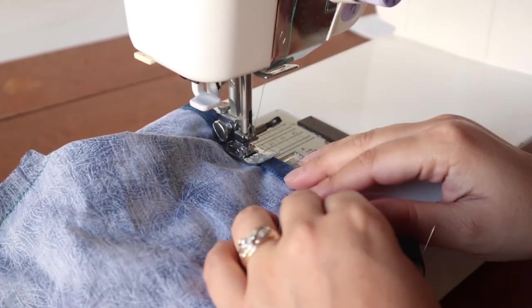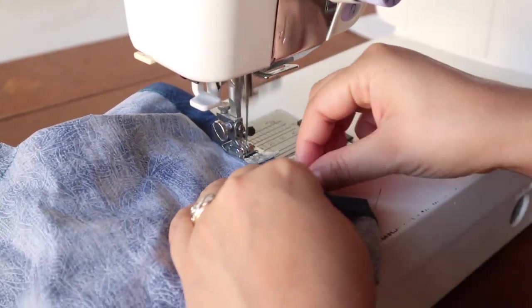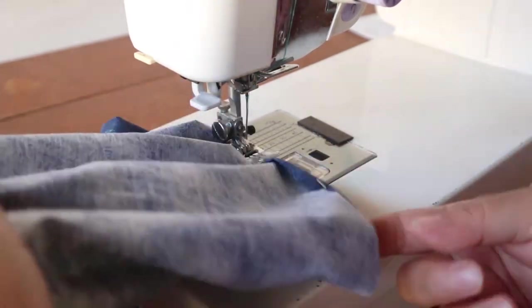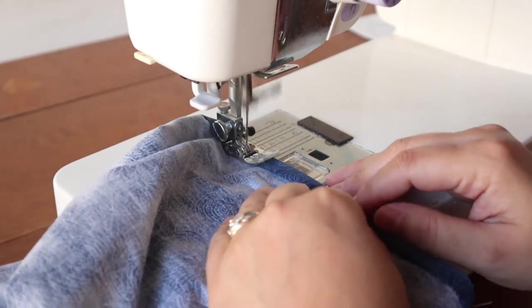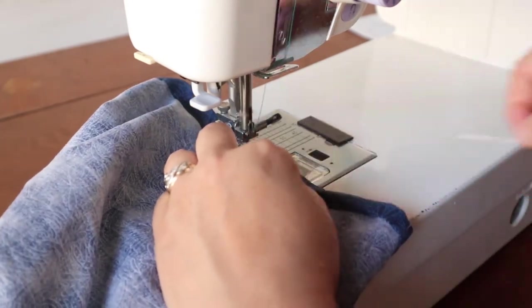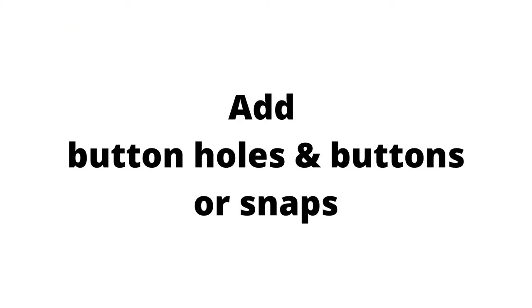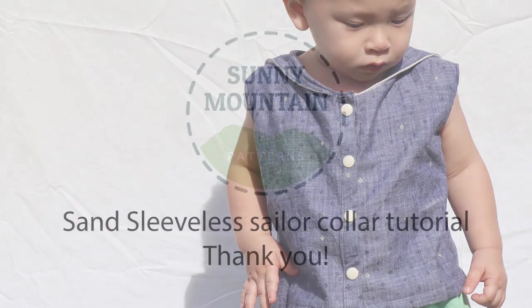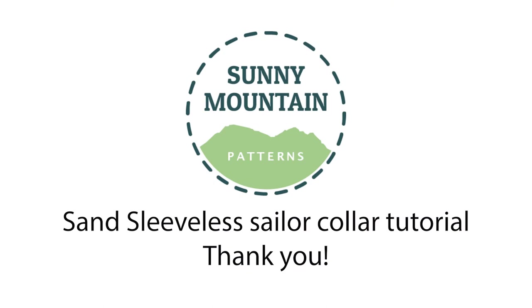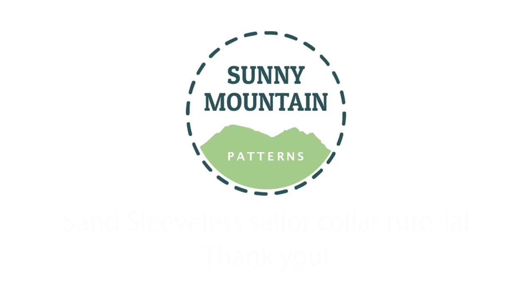Now you can hem everything all the way across. So this is a double fold of a half an inch. If you need a slightly longer one, you can do a little less, or you can do overlocking and then just fold up once, or you can do a little bit wider hem if you need it to be shorter. I doubt anyone needs it shorter, but this is the Sunny Mountain Patterns tutorial.